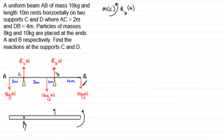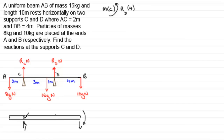Now let's take the force acting at B — 10G Newtons. If you're still holding the ruler at point C and push in the direction of that force downwards, the ruler will want to turn in a clockwise sense about C. So that's going to be in the negative sense. We've got minus 10G multiplied by the distance from B back to C, which is 4 plus 1 plus 3 — that's 8 metres. So minus 10G times 8.